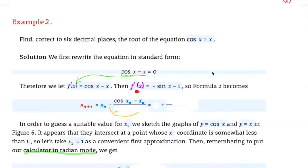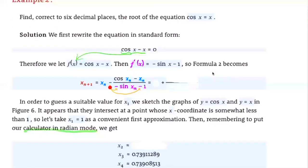In the denominator we put f prime of xn, and f prime of x equals negative sine x minus 1, so substituting xn in gives negative sine of xn minus 1. Notice that there's a minus sign in front and a minus in the denominator. We can distribute this minus sign, so minus minus becomes a plus for both terms.